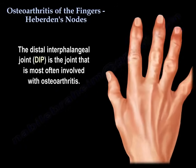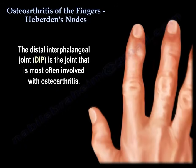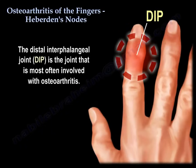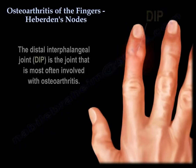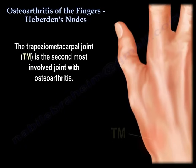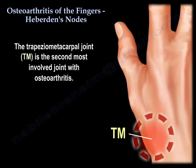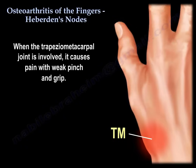The distal interphalangeal joint, DIP, is the joint most often involved with osteoarthritis. The trapeziometacarpal joint is the second most involved joint in the hand with osteoarthritis. When the trapeziometacarpal joint is involved, it causes pain with weak pinch and grip.